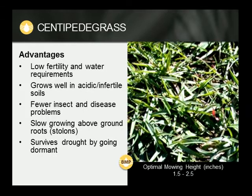Advantages of Centipede Grass. Centipede Grass is well adapted to the climate and soils of central and northern Florida, and is a common home lawn grass in the Florida panhandle. There is now one cultivar, Hammock, adapted to South Florida conditions. Centipede Grass does very well in acidic soils, pH 4.5 to 6.5, and in fertile soils. It has fair shade tolerance, and survives drought conditions by going dormant, which results in brown turf. It can be established from seed, sod, or plugs, and it spreads by above ground stems called stolons.